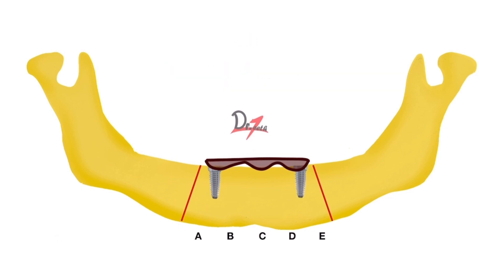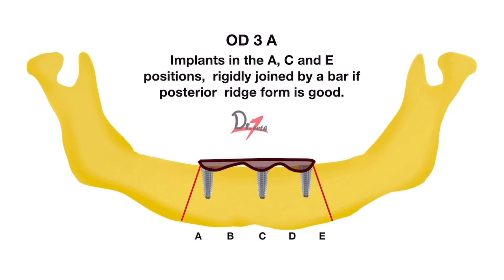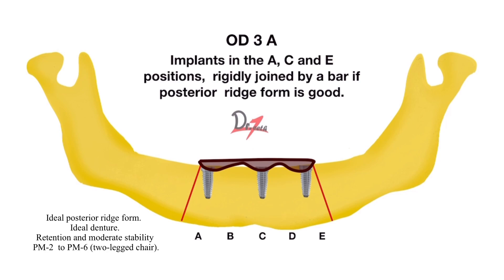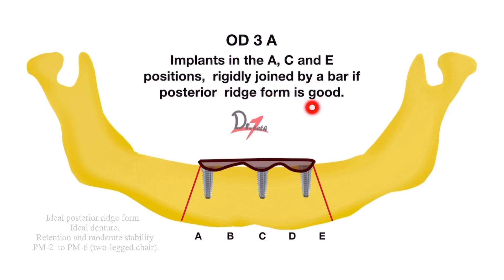Then we have OD3a. Here the implant positions have changed — now we have implants at A, C, and E, and these are joined by a bar. This option is used when the posterior ridge form is good.